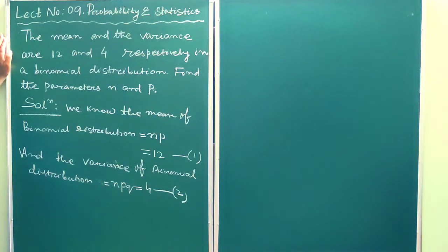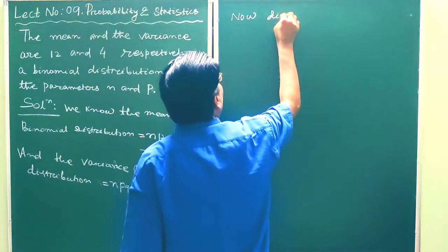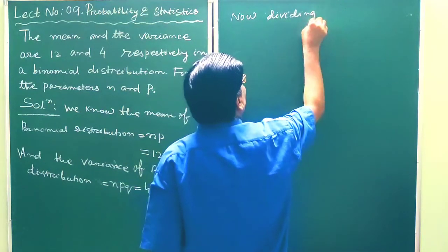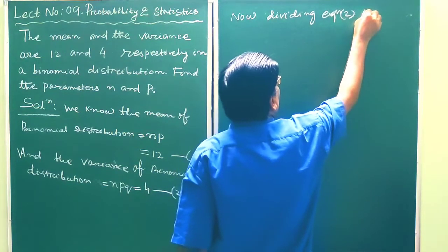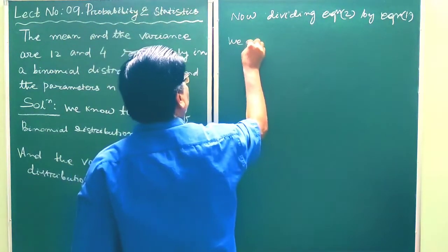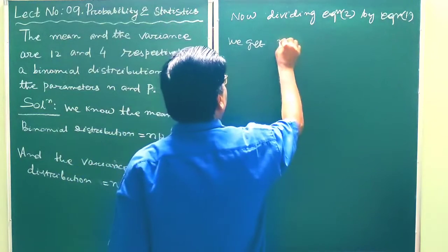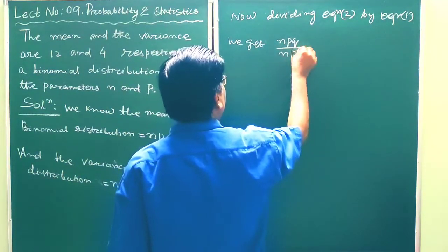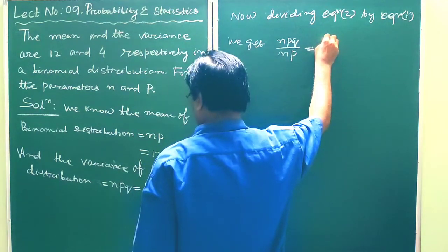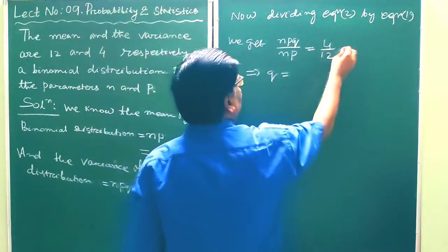So we know the mean of the binomial distribution is np, that is 12, and the variance of the binomial distribution is npq, that is equal to 4. Now dividing equation 2 by equation 1, we get npq by np is equal to 4 by 12. So this implies q is equal to 4 by 12.